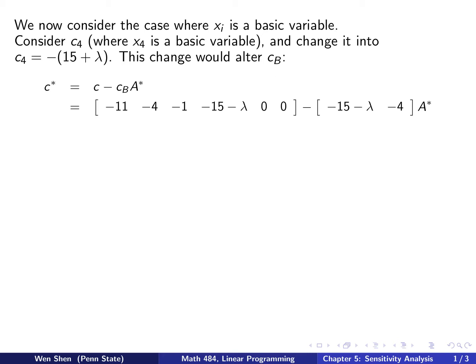Let's write out the computation of the c star, the final tableau coefficient is c minus cb times a star. And what is the c here? So the c here is this vector and the c4 is changed into negative 15 minus lambda. And 0, 0 here minus, and this is the cb. And then because x4 is a basic variable, this one enters. So I also get negative 15 minus lambda here, minus 4. So that's cb. And then a star.